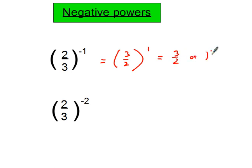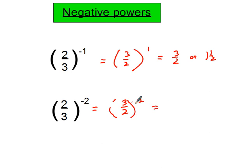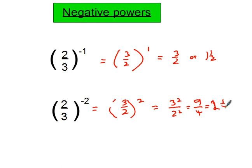You could also write that as 1 and a half or 1.5. For the second example, we deal with the negative power first — flip the fraction upside down to find the reciprocal and change the power to a positive. Then square both the numerator and denominator: 3 squared over 2 squared gives 9 over 4, which you could write as 2 and a quarter.